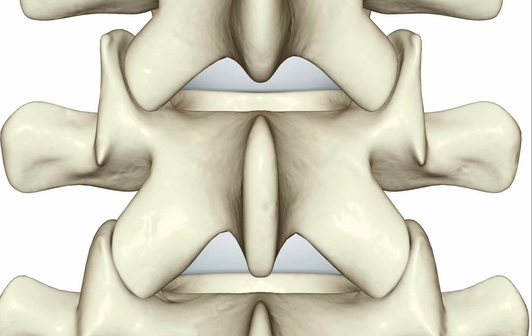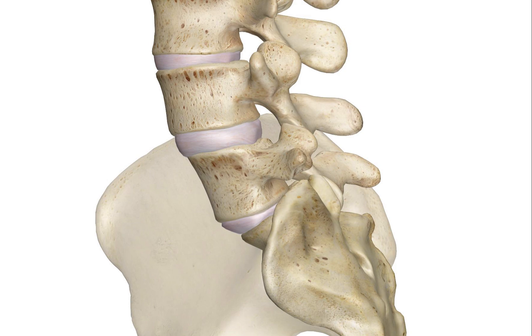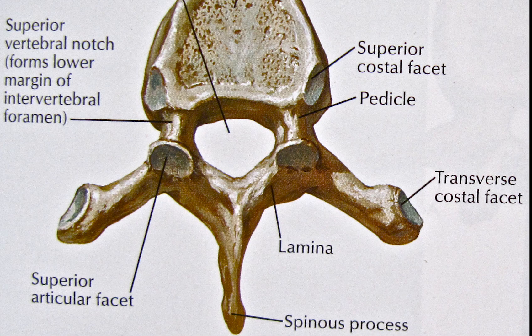The vertebrae in the human vertebral column are divided into different regions which correspond to the curves of the vertebral column. These regions are called the cervical spine, thoracic spine, lumbar spine, sacrum, and coccyx. The vertebrae of the cervical, thoracic, and lumbar spines are independent bones and generally quite similar. The vertebrae of the sacrum and coccyx are usually fused and unable to move independently.